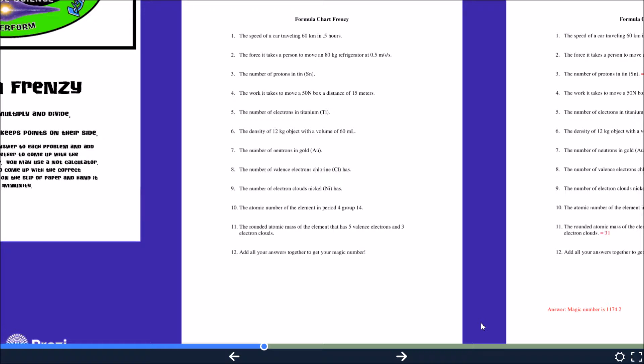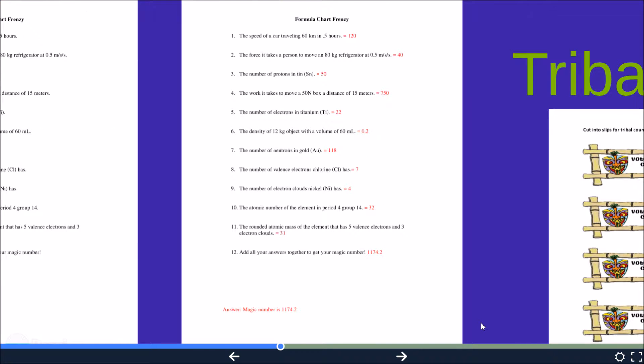That total will give the team a magic number. The first team to write that magic number down and give it to the host or the teacher wins immunity. Again, the teacher will have a key for everything in my tiered interventions.